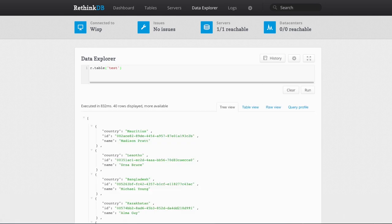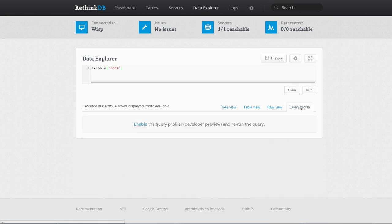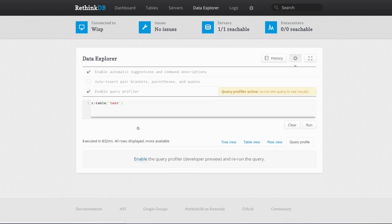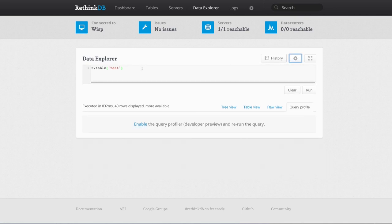So if I just run this query and get a batch of results from the table test, you'll see that there's a new tab query profile over here on the right. If I click on that, it gives me the option to enable the query profiler. And now it'll be on every time I run a query until I turn it off again.